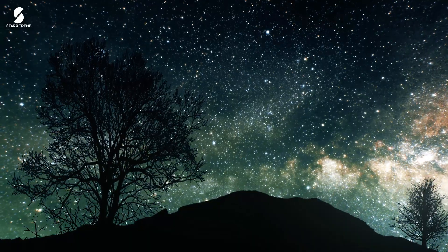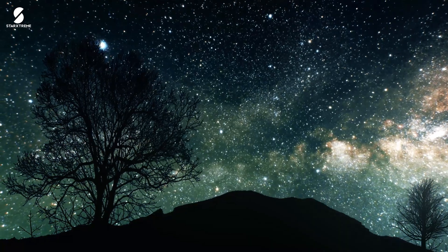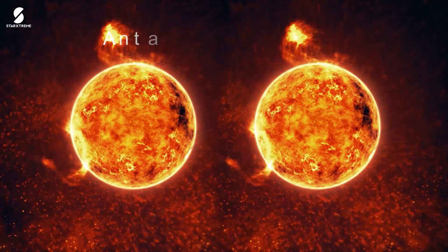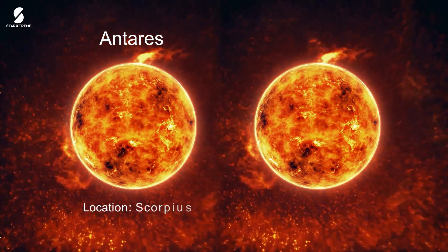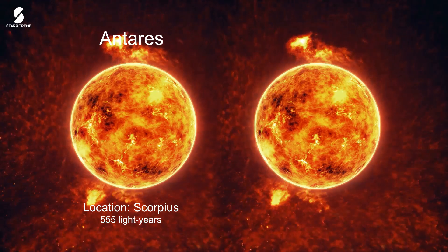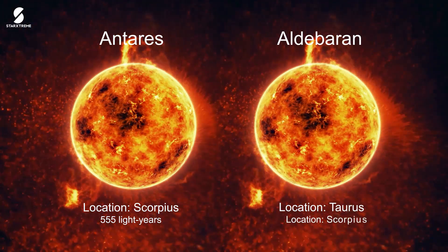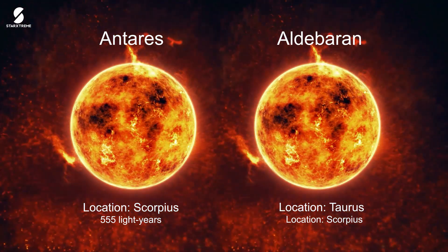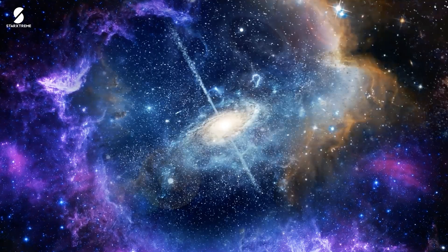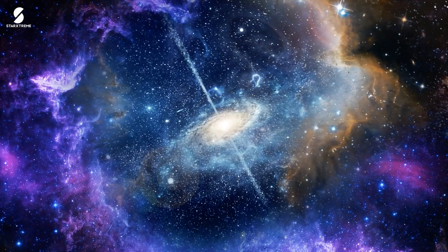Some other supernovas we can aim to study are on two other red supergiant stars in the night sky. First is Antares in the constellation Scorpius, about 555 light-years distant, and the second is Aldebaran in the constellation Taurus, about 65 light-years away.